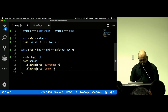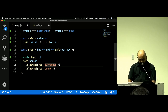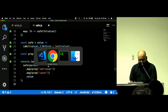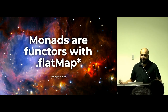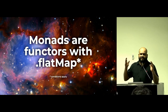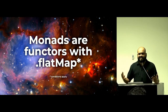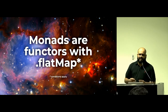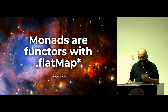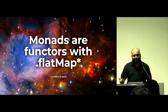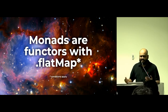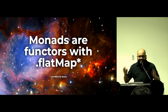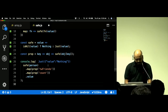By the way, if you have a functor that also has `.flatMap()`, that is called a monad. Monads are functors with flatMap — it is that simple. I don't know why people make these things so complicated. Before `flatMap` was a JavaScript thing, it was called `.chain()` or `.bind()` — different names in different communities, but the idea is what matters.